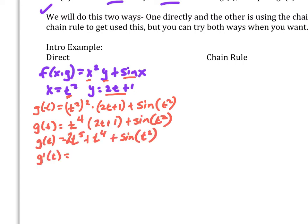So I simplified it. Now I can take the derivative with respect to t, so I'm going to get 10t to the fourth, plus 4t to the third, plus derivative of sine, cosine, and then we've got to chain it off. So then that is our answer if we did it directly.